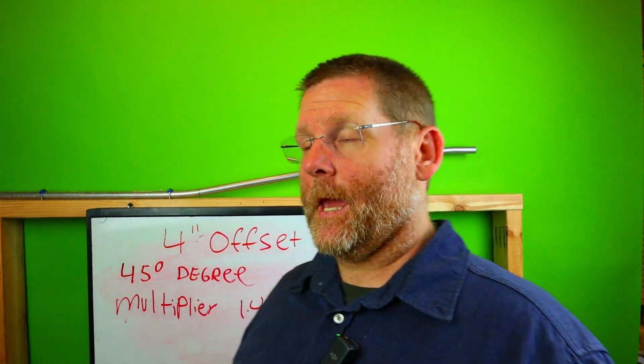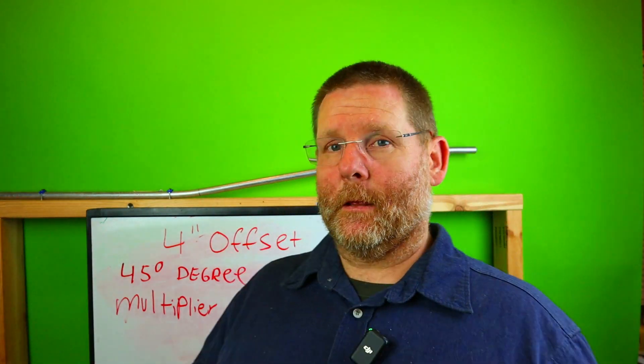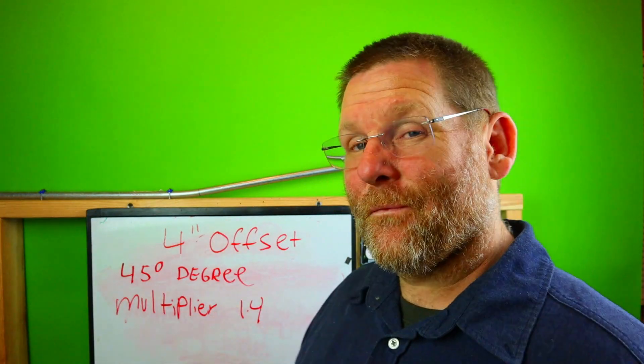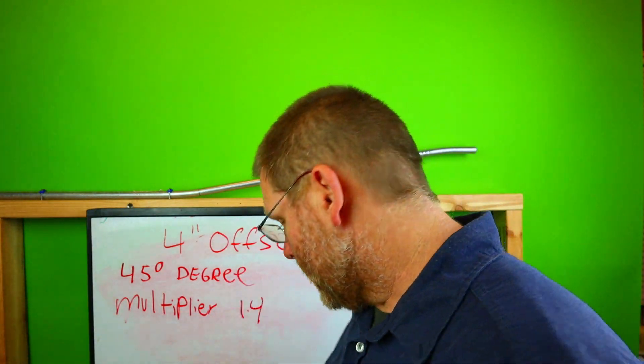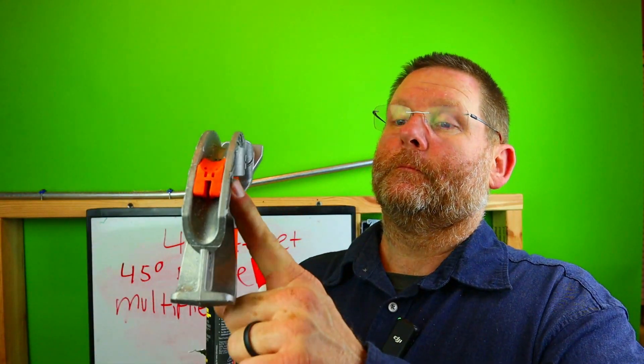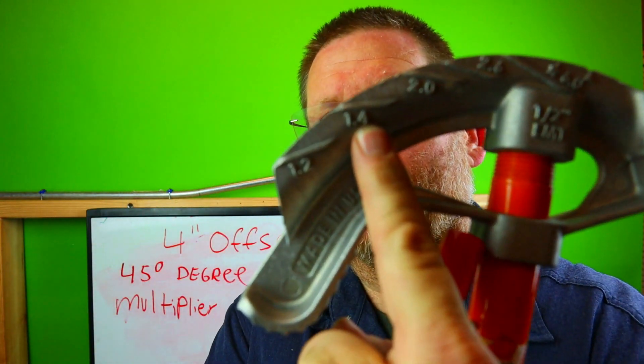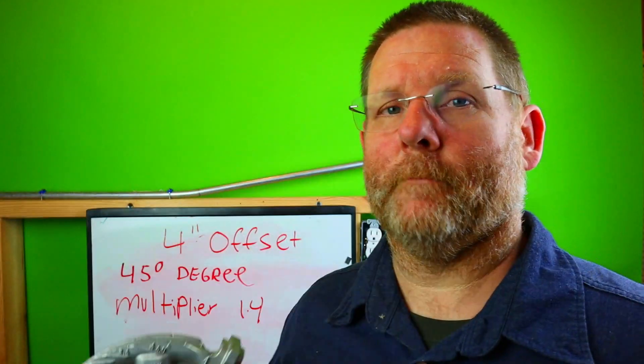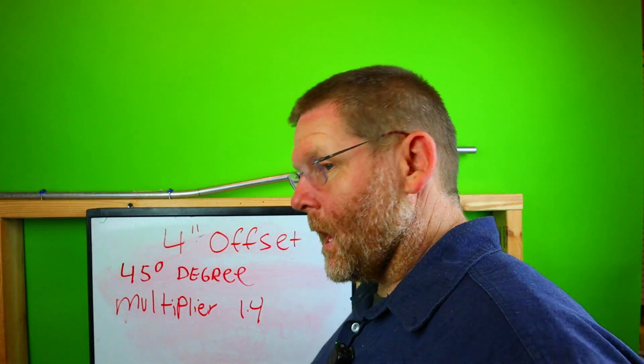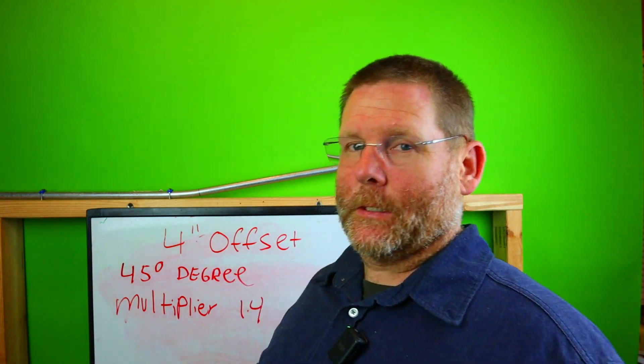Welcome back to my channel guys. Now today we are going to be bending another 4-inch offset. The multiplier for 45 degrees is 1.4 if you do not remember that and you have a bender. Right there guys, 1.4. So we've already said a whole lot in the other videos that we really don't need to talk a whole lot about different things, so we're going to jump right into this.